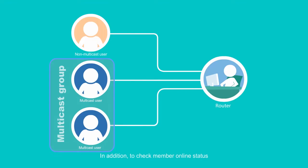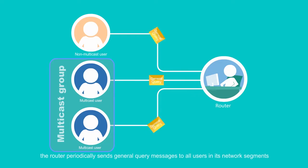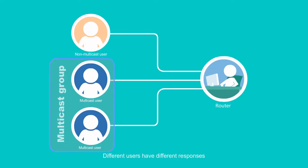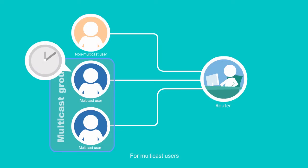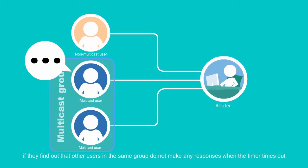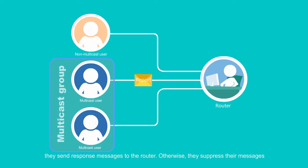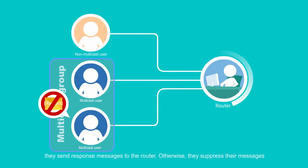In addition to checking member online status, the router periodically sends general query messages to all users in its network segment. Different users have different responses. Non-multicast users make no responses. For multicast users, if they find that other users in the same group do not make any responses when the timer times out, they send response messages to the router. Otherwise, they suppress their messages.